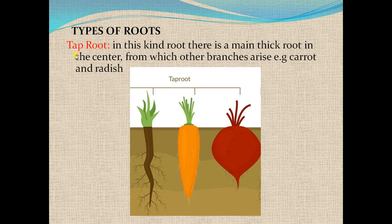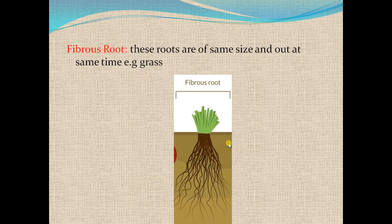Types of root. First, tap root: in this kind of root there is a main thick root in the center, as you can see here, from which other branches arise. You can see here these small branches. The examples of tap root are radish, carrot, and turnip. Next is fibrous root — these roots are of same size and arise at the same time, and the example is grasses.